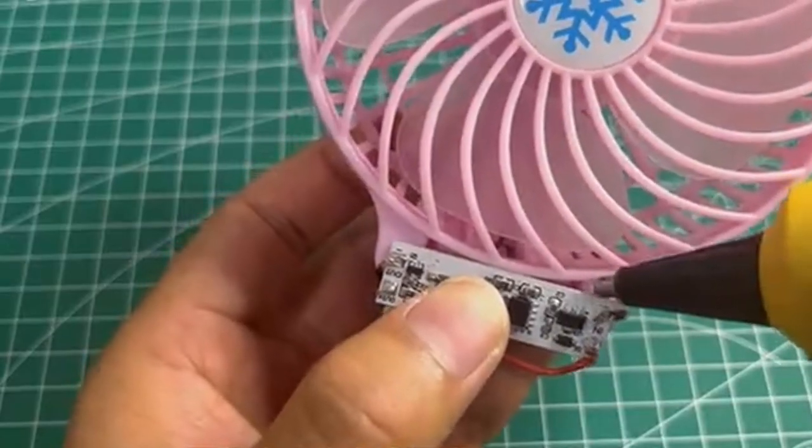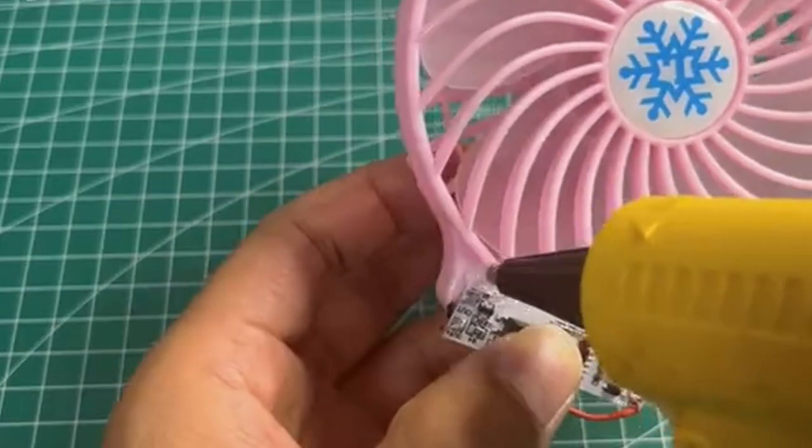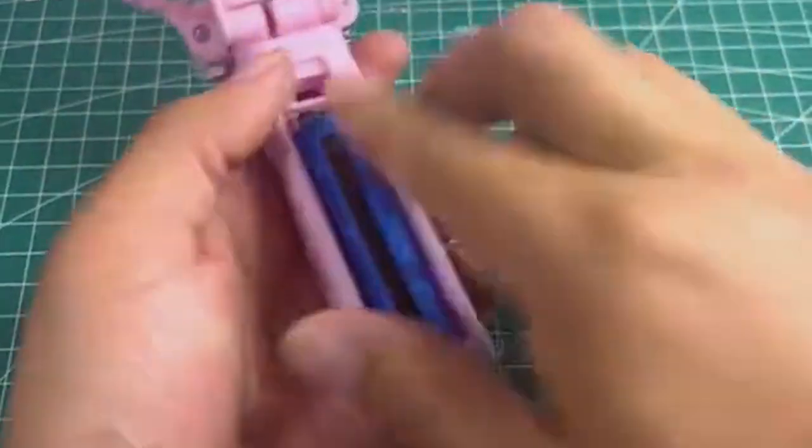Then for the finishing touches, use a hot glue gun to fix the motion sensor chip at the front and bottom of the fan. Then finally put back the fan cover and insert the battery.